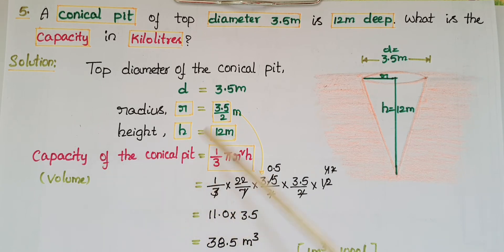Capacity of the conical pit equals the volume of the conical pit, which is (1/3)πr²h. So (1/3) × (22/7) × (3.5/2)² × 12, substituting all the values into the formula.